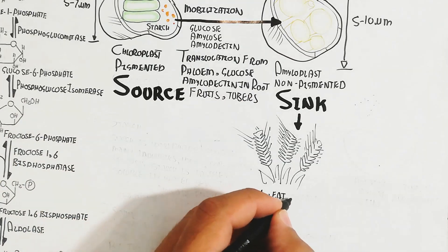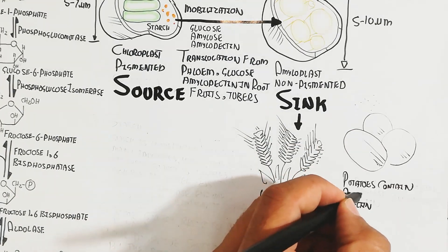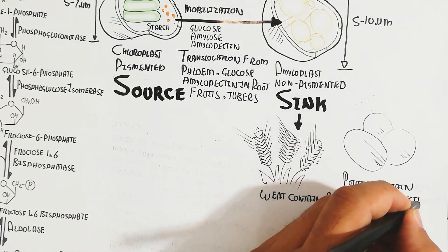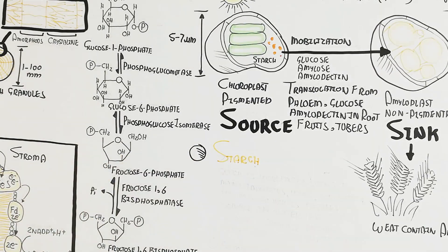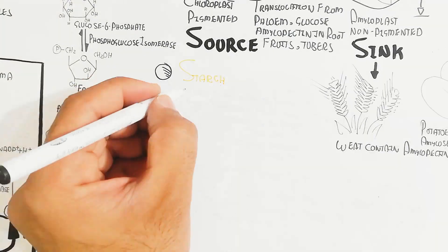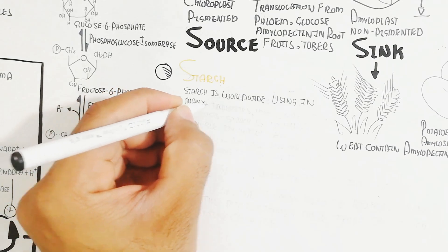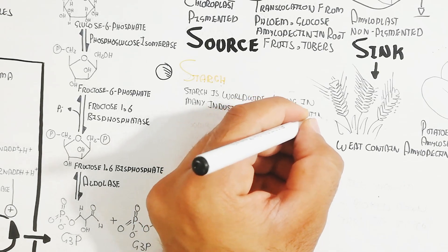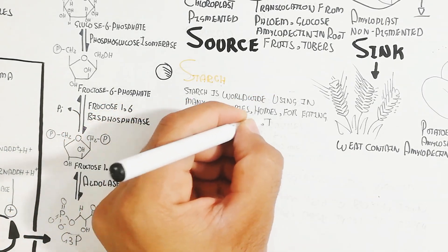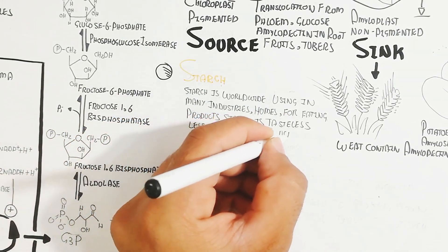A good example: wheat contains mainly amylopectin, while potatoes contain both amylose and amylopectin. Starch is widely used in many industries and homes for food products. It is tasteless and less soluble in water, and amylase enzymes are required to break it down.